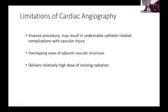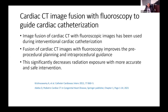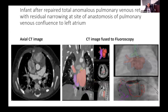When it comes to cardiac angiography, it is an invasive procedure — particularly if only for diagnostic purposes — with complications related to vascular injury, overlapping of adjacent structures, and relatively high ionizing radiation dose. It is important to merge CT images with fluoroscopy to better understand the anatomy and decrease radiation exposure. Here, an infant with anomalous total pulmonary venous return after repair shows discrete narrowing of pulmonary vein anastomosis to the atrium. We merged the segmented CT image to the fluoroscopy system and pinpointed the location of that narrowing so the intervention team could balloon it — making it a faster, quicker, safer procedure with less radiation exposure.